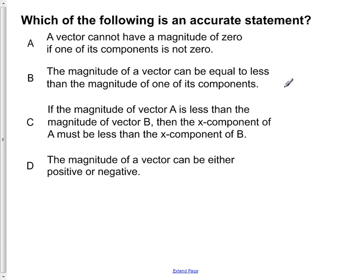Which of the following is an accurate statement? A: a vector cannot have a magnitude of zero if one of its components is not zero. B: the magnitude of a vector can be equal to or less than the magnitude of one of its components. C: if the magnitude of vector A is less than the magnitude of vector B, then the x component of A must be less than the x component of B. Or D: the magnitude of a vector can be either positive or negative. The best way to go through this problem is to go through each of the choices and determine whether it is true or false.